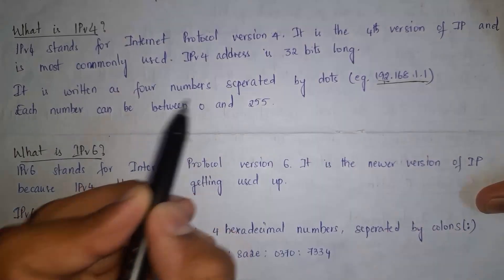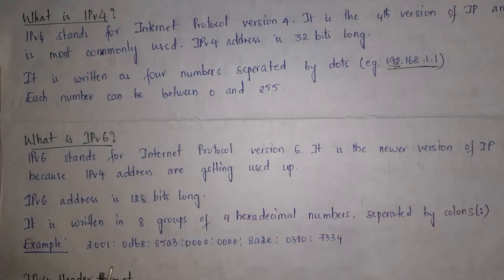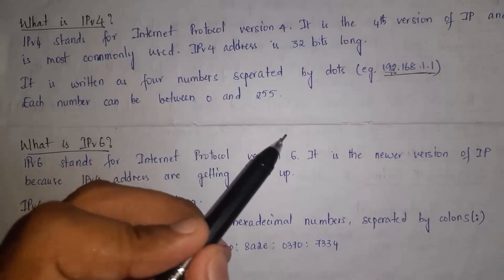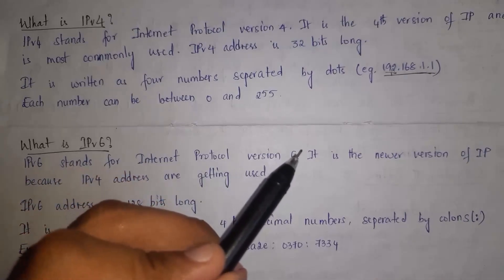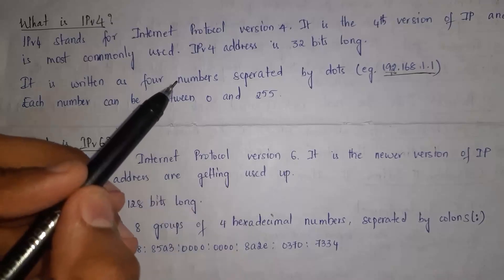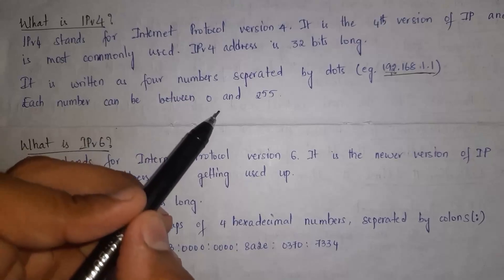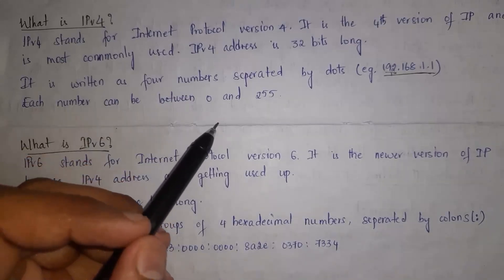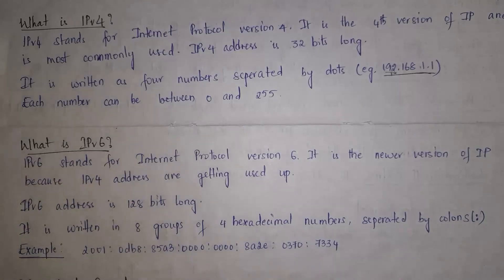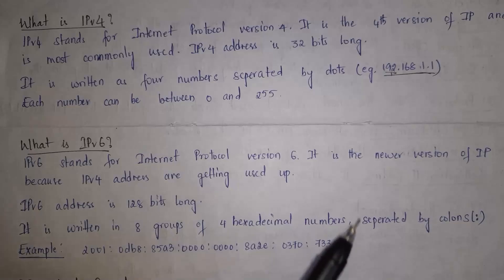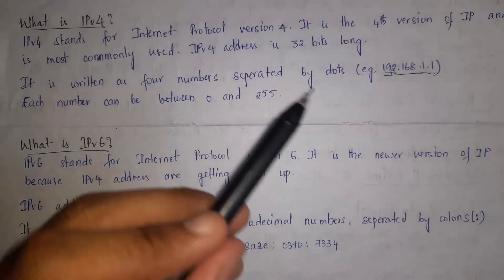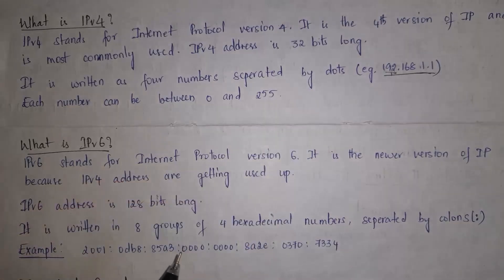Next I will explain what is IPv6. In olden days, only a few people used the internet, so IPv4 address was sufficient. We can give IPv4 addresses to only billions of devices, but at present there are more than trillions of devices on the internet and IPv4 addresses are already exhausted. To overcome this problem, IPv6 was introduced. IPv6 stands for Internet Protocol version 6. IPv4 address size is 32 bits, whereas IPv6 address size is 128 bits.